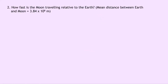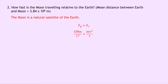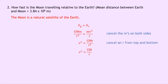Question 2 says how fast is the moon travelling relative to the Earth, where the mean distance between the Earth and the moon is 3.84 times 10 to the 8 metres? Well, the moon is a natural satellite of the Earth, so the gravitational force of attraction equals the centripetal force. So we write GMm over r squared equals mv squared over r. Cancelling the small m's on both sides, we get v squared equals GMr over r squared, and cancelling an r from top and bottom gives us v squared equals GM over r.